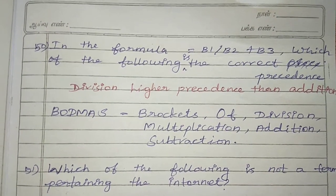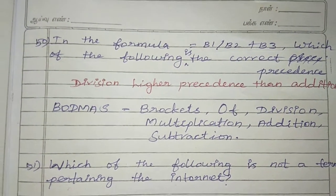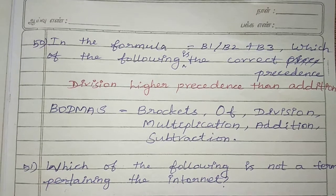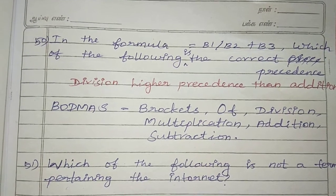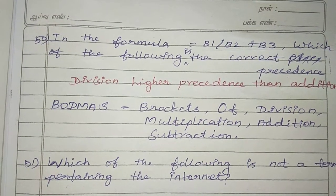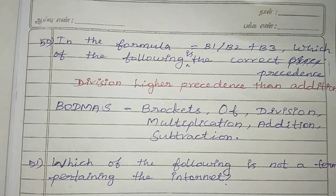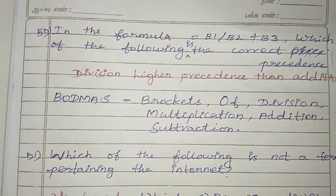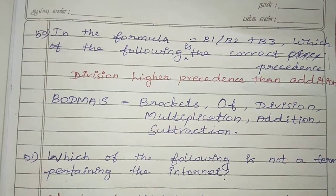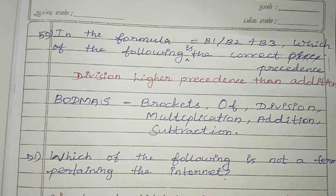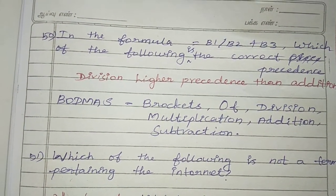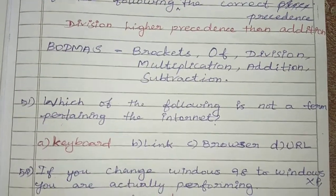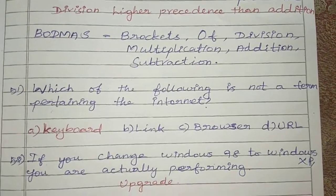The method for precedence is BODMAS: B for Brackets, O for Off, D for Division, M for Multiplication, A for Addition, and S for Subtraction. So division is processed before addition.